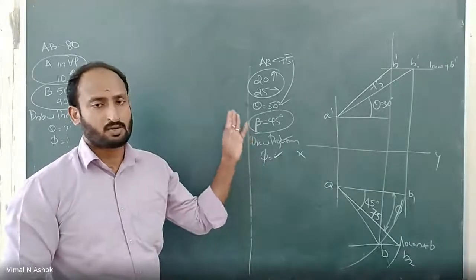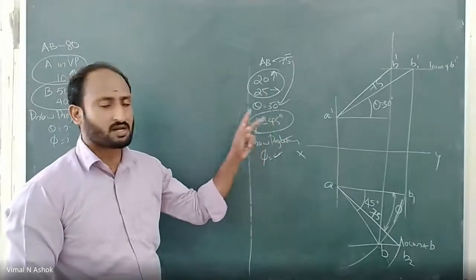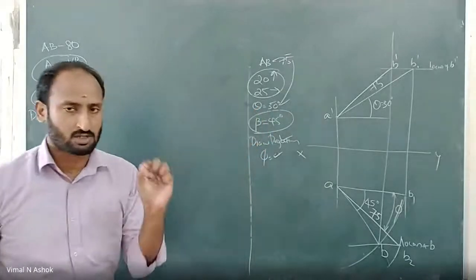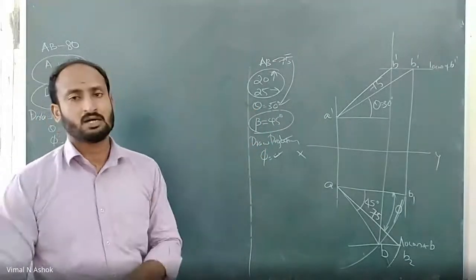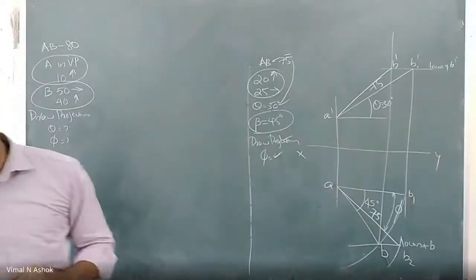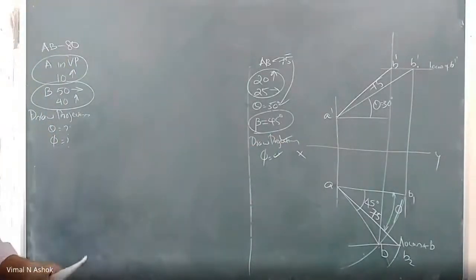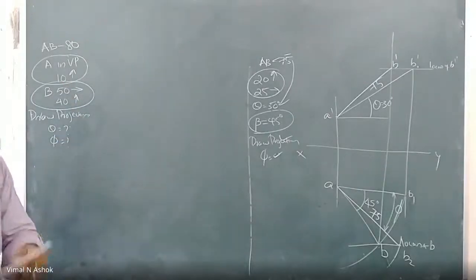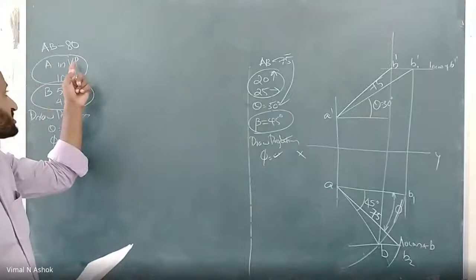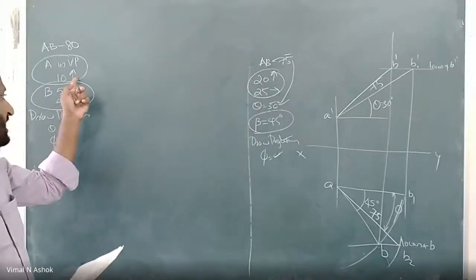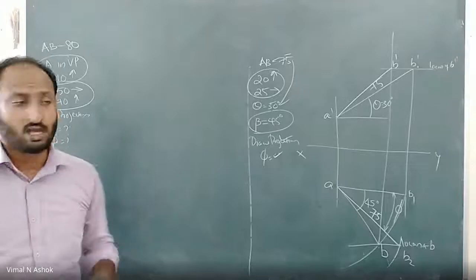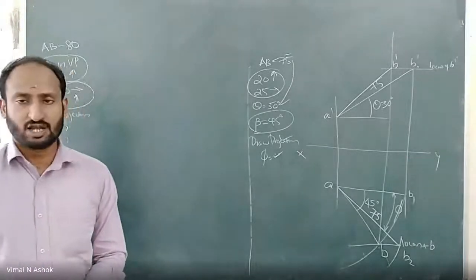So that is why we begin. If you ask, students get into it, then we get into it again, then we get into it again. Then the next step — second problem. Second problem: line AB is 80mm long. A is in VP, A is in VP 10mm above HP.